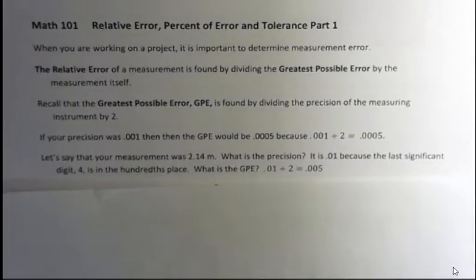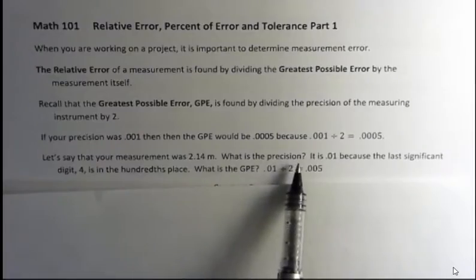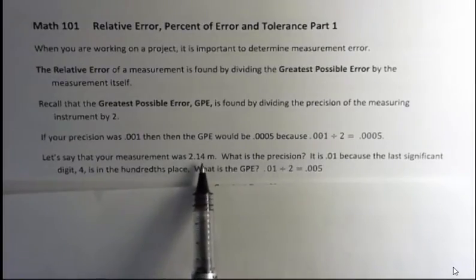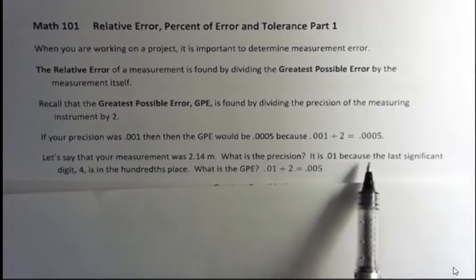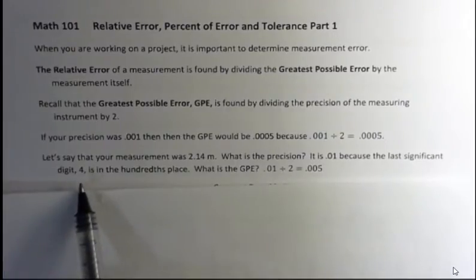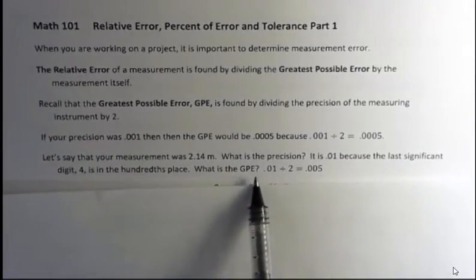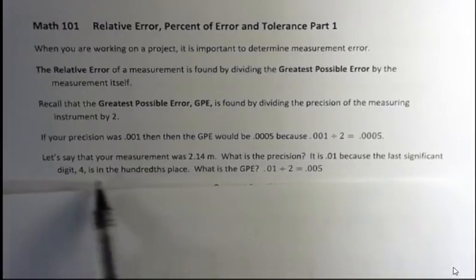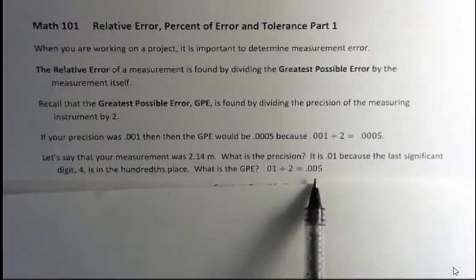So for instance, let's say that your measurement was 2.14 meters. What's the precision here? Well, the precision is to the second decimal place, that's the one hundredths place. So it's 0.01 or one hundredth, because the last significant digit, which is four, is in the hundredths place. So what's the greatest possible error? Well we take our precision, which is 0.01, and we divide by two, and we get 0.005.